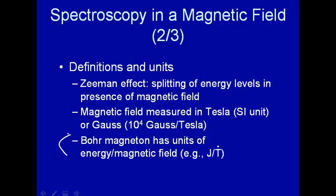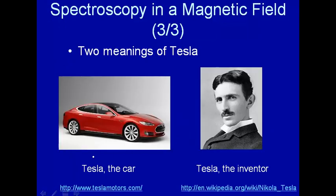Tesla actually has two meanings here. One is the car, the Tesla electric car. The other is Tesla the inventor. In fact, the unit of magnetic field was named after Tesla. So don't confuse the car with the inventor. It was the inventor for which the magnetic field unit was named after, not the car.